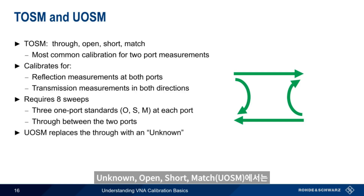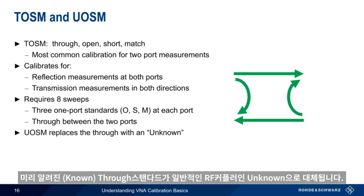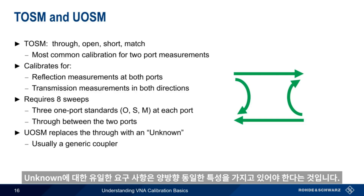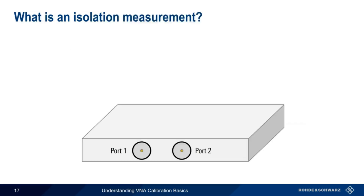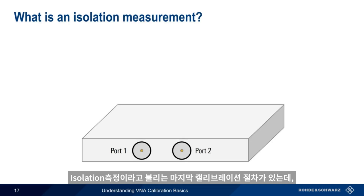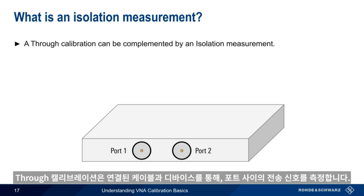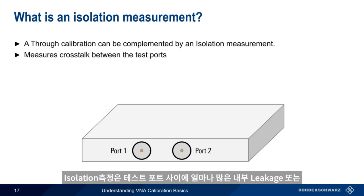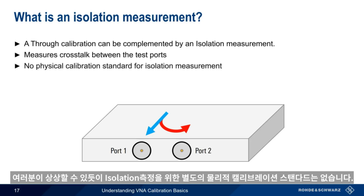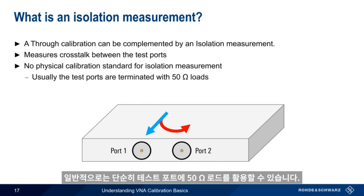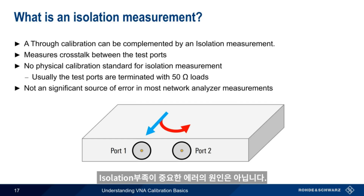In unknown-open-short-match, the known through-calibration standard is replaced with an unknown. This is usually a generic RF coupler. The only real requirement on the unknown is that it have the same characteristics in both directions. This calibration method is helpful when our DUT has different connector types, such as an SMA on one end and an N-connector on the other. There's one last type of calibration procedure, called an isolation measurement, which usually complements a through-measurement. Remember that a through-calibration measures the signal passing between the ports via an attached cable and connected devices. An isolation measurement is used to determine how much internal leakage, or crosstalk, there is between the test ports. There's no physical calibration standard for an isolation measurement. The normal procedure is simply to terminate the test ports with 50 ohm loads. In most modern network analyzer measurements, isolation, or rather the lack of isolation, is not a significant source of error.